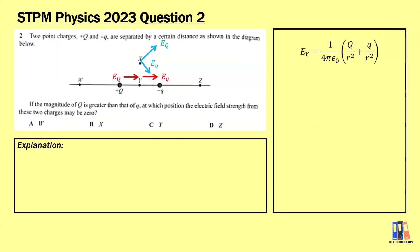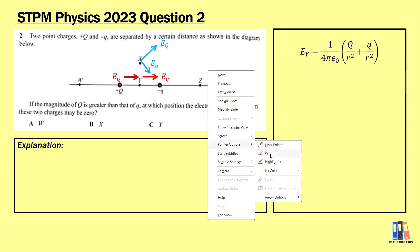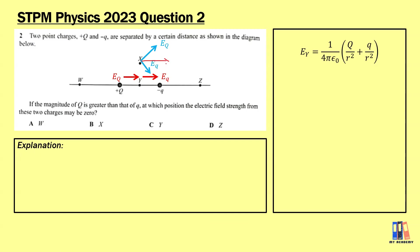Let's review the 2023 question. Two point charges, positive Q and negative Q, are separated by a certain distance. If the magnitude of positive Q is greater than negative Q, which position — W, X, Y, or Z — has zero electric field strength? We start with position X: the field from the positive charge points upward (away from it), and from the negative charge it points inward towards it. The vector addition gives a non-zero resultant.